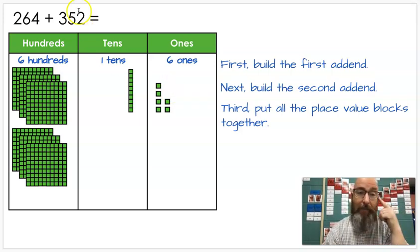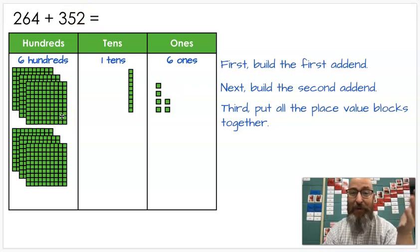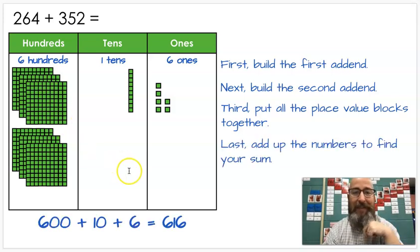So now that I've done that, I can count it up. Six hundreds makes how much? Six hundred. That's right. One ten, of course, is? Ten, and six ones is how much? Six. Do you know what the answer is? See if you can figure it out before I click the next slide. Six hundred plus ten plus six. Six hundred plus ten is six hundred ten. Plus six is six hundred sixteen. Six hundred sixteen, which means our answer to two hundred sixty-four plus three hundred fifty-two is six hundred sixteen.